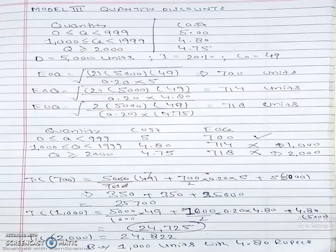If ordered quantity lies between 1,000 to 1,999, the cost will be 4.80. From the previous price, he would offer a discount of 0.2 rupees. When I order quantity greater than 2,000, he gives a discount of 0.25 rupees from the original per unit cost.